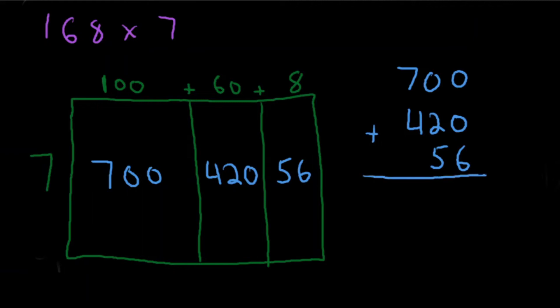Let's take our time and add correctly. The ones column gives us 6, the tens column gives us 7, and the hundreds column gives us 11, giving a final answer of 1,176. Watch this part of the video again if you need to. Ask yourself where you're making a mistake, what doesn't make sense, where you're stuck — then try the next problem. A growth mindset means you're okay with struggling; you just don't know it yet.